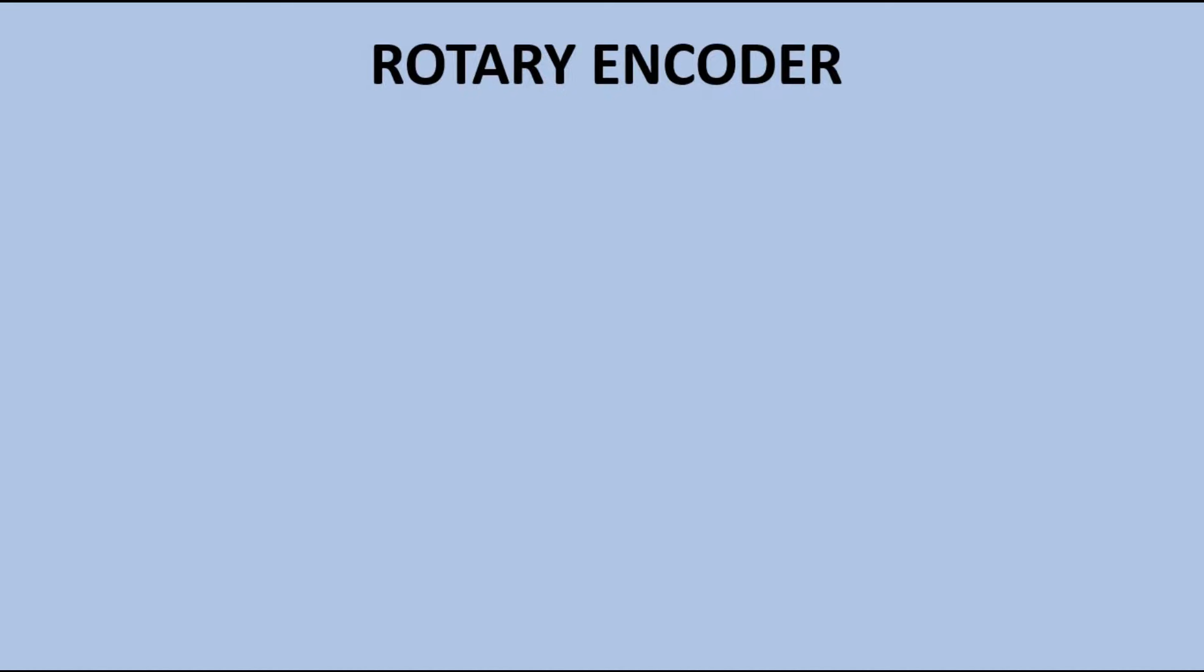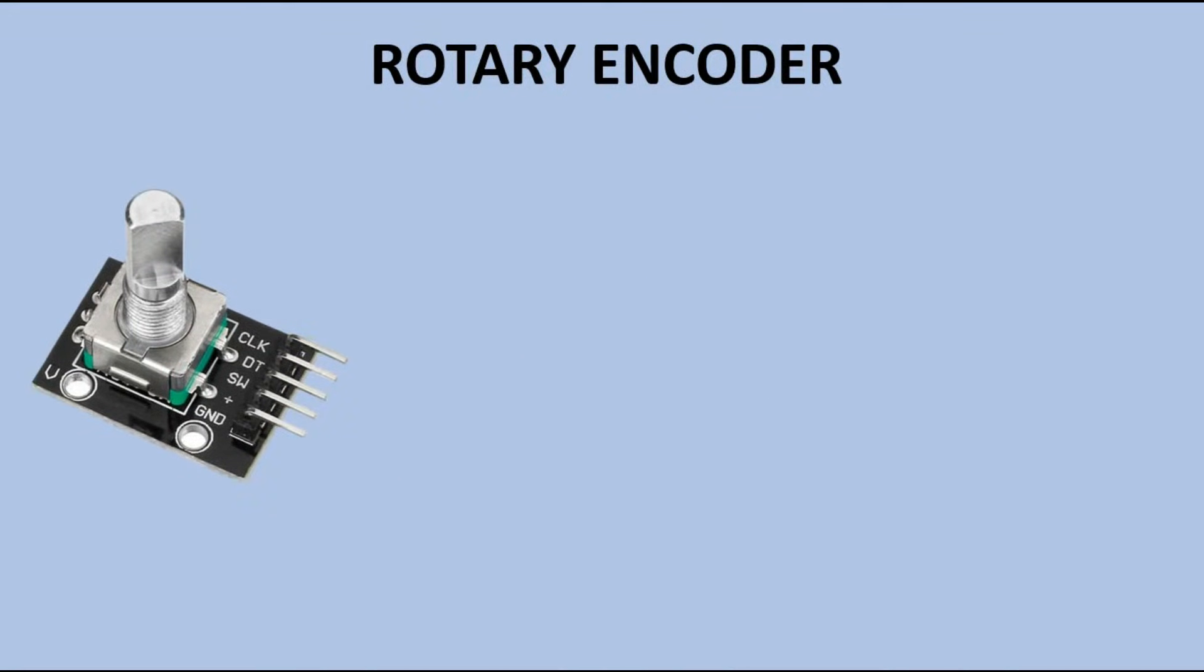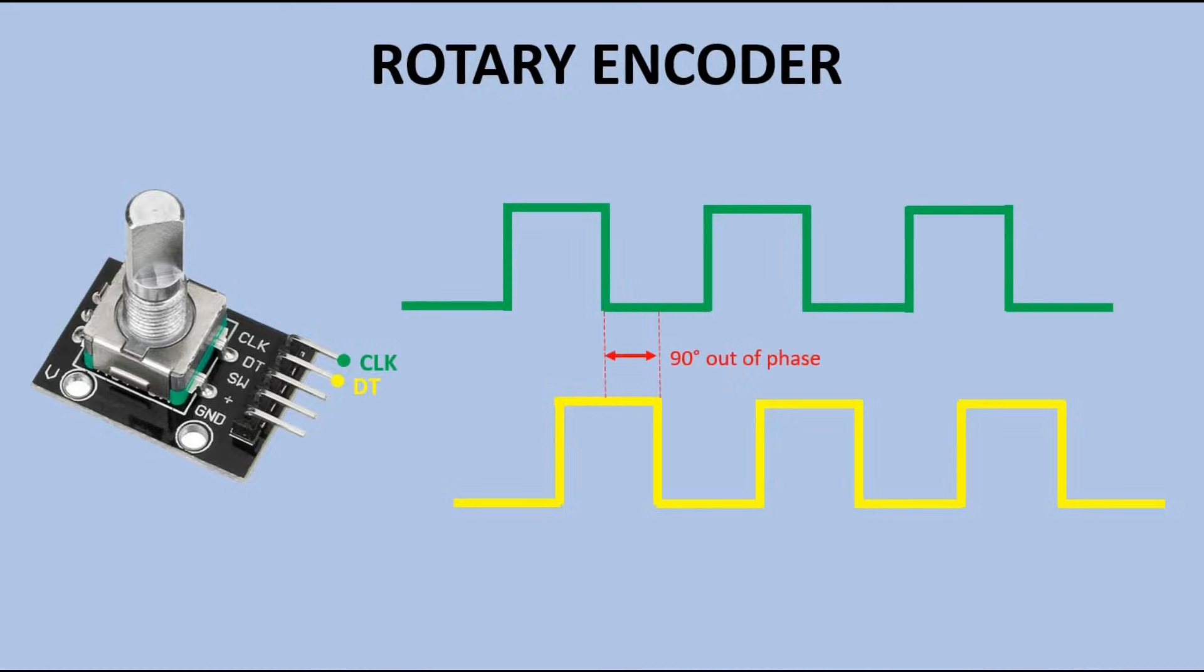Now let's look closer at the encoder. When turning the shaft the signal at the CLK pin looks like this. The signal at the DT pin looks very similar but it is not the same. It lags behind CLK by 90 degrees phase shift. Why? This shifted output is used to determine the direction of rotation. This is actually a pretty smart idea.